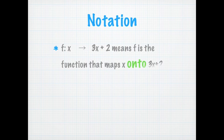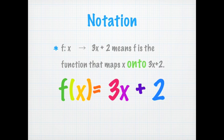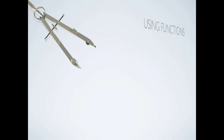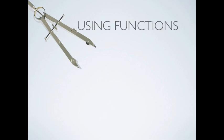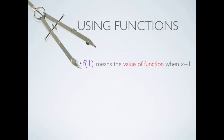f is the function that maps x onto 3x plus 2. Hence, f of x equals to 3x plus 2. f of 1 means the value of the function when x equals to 1.